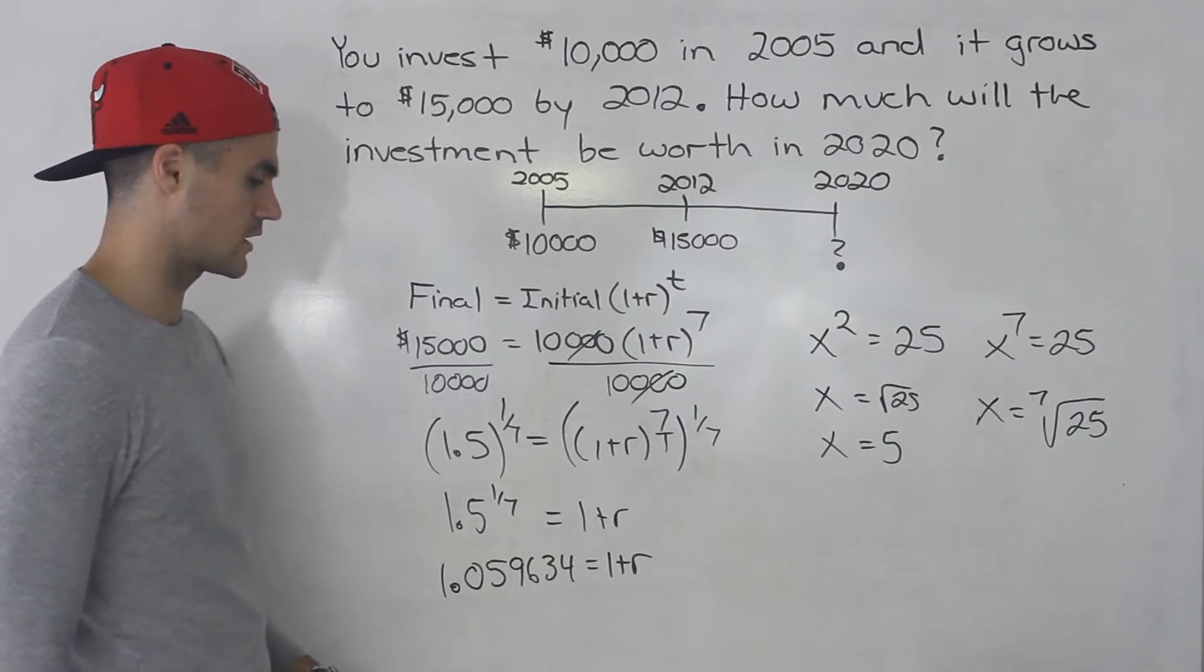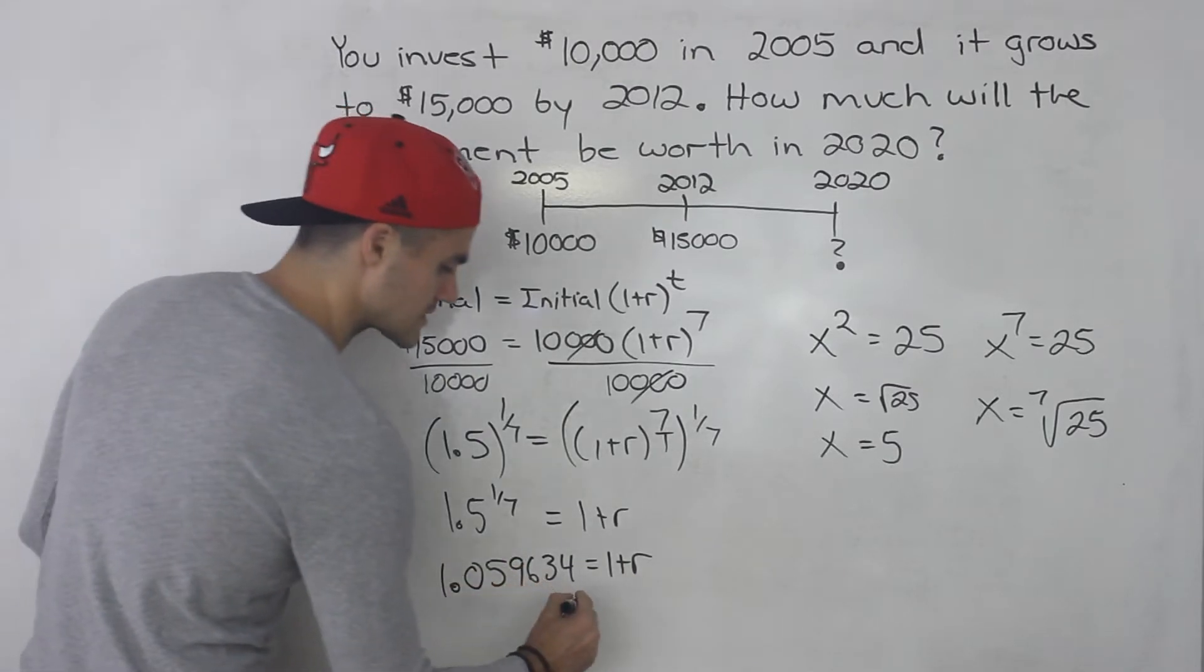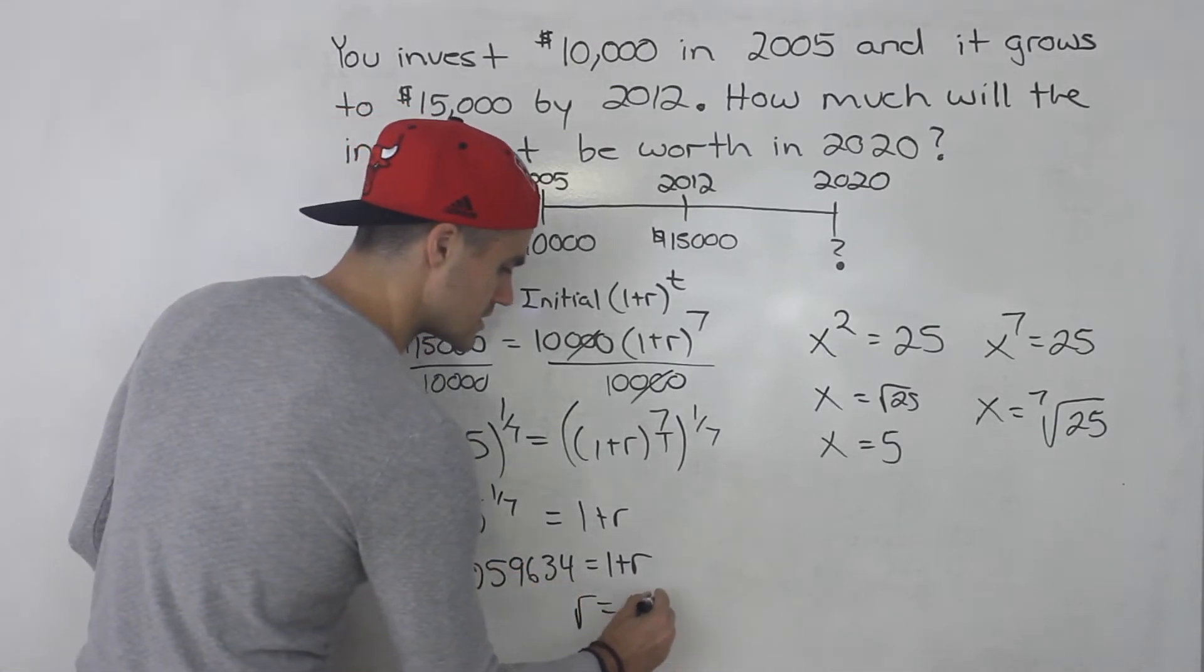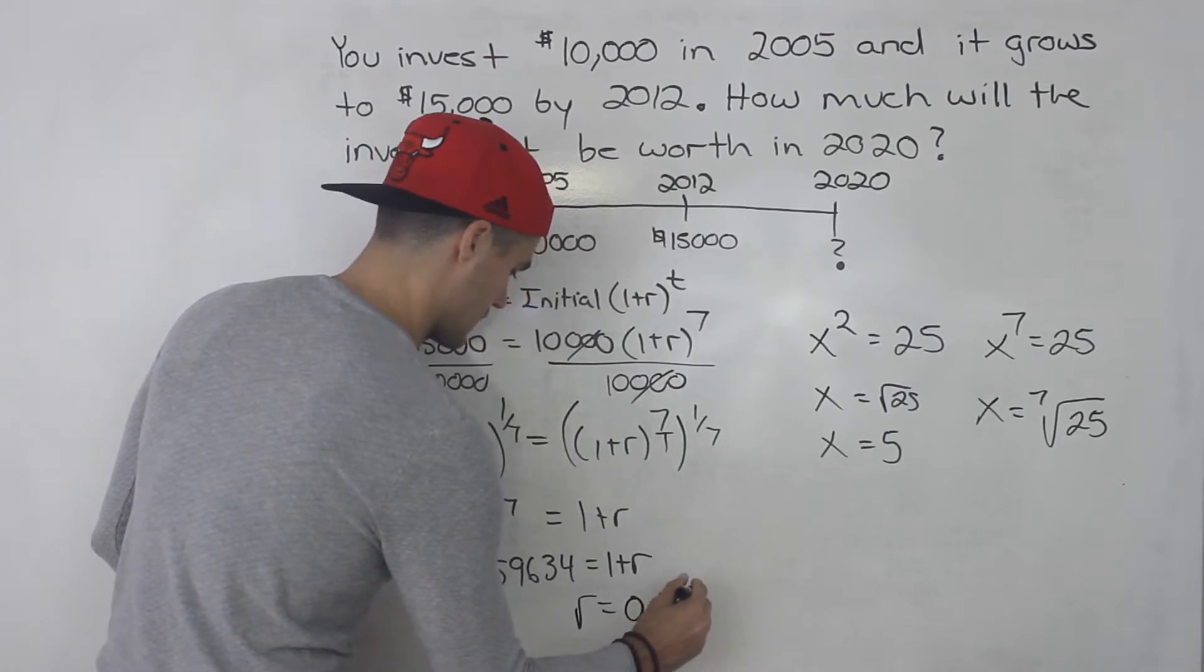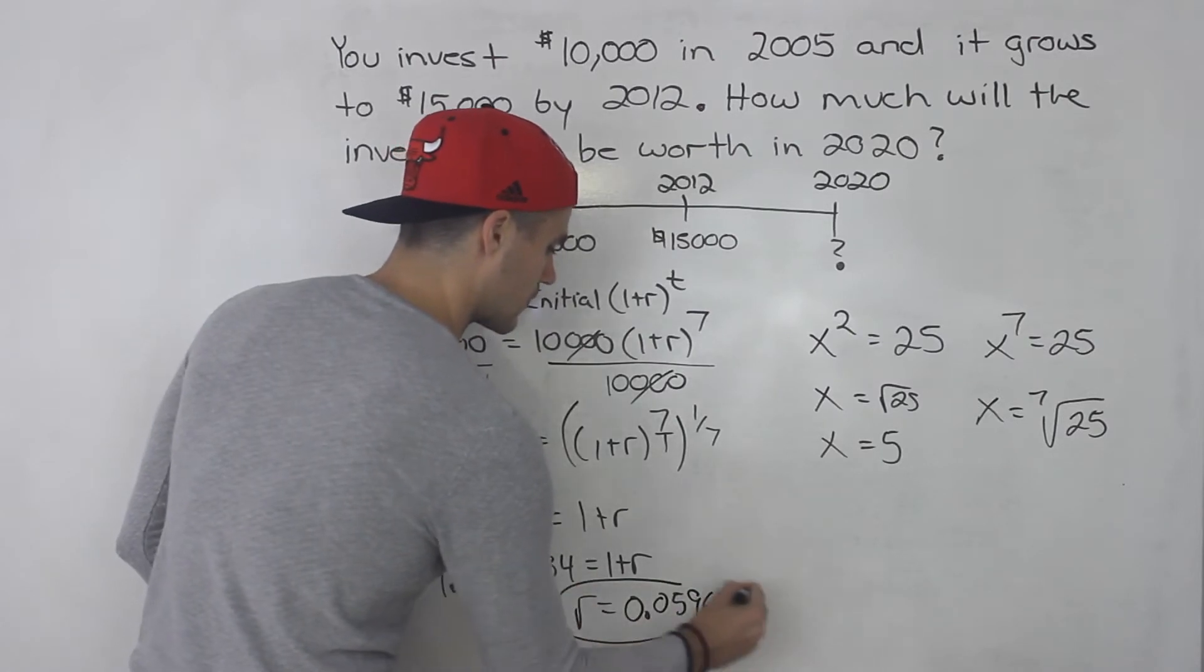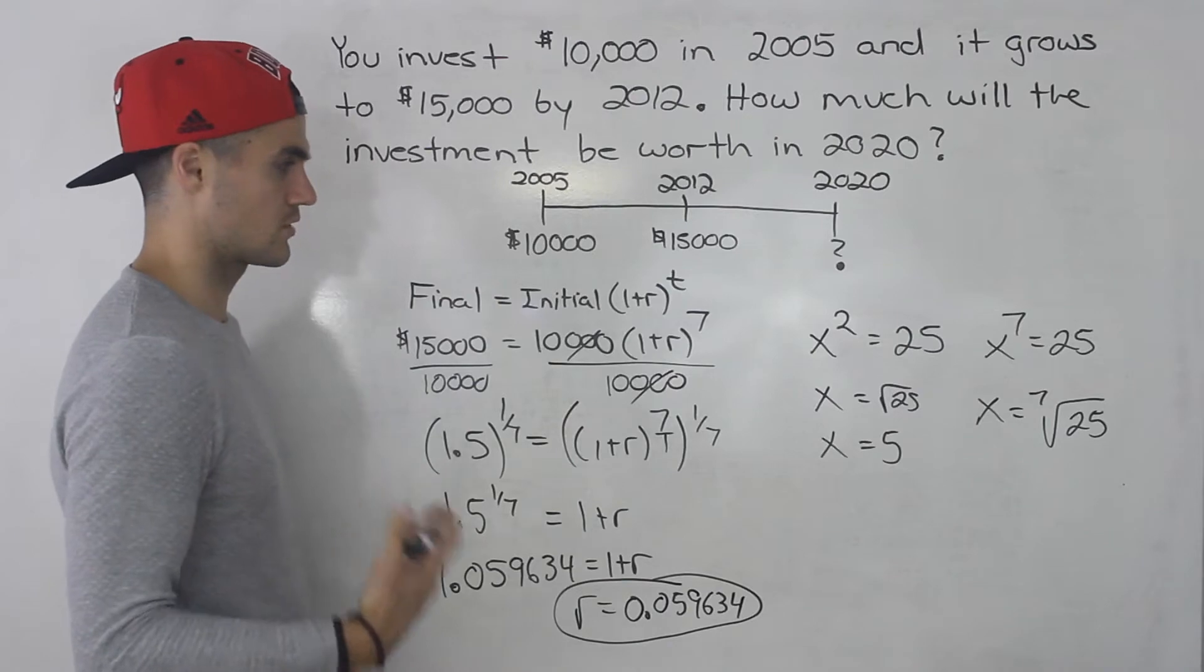I usually don't like to round it too much initially. So when we solve for this r, bring the 1 over, basically r is 0.059634. So the money is growing at 5.9634 percent per year.